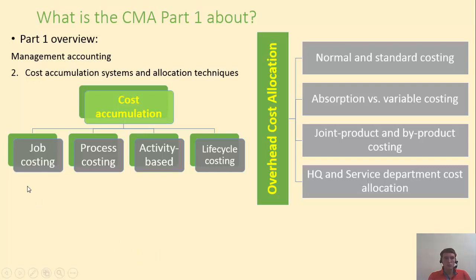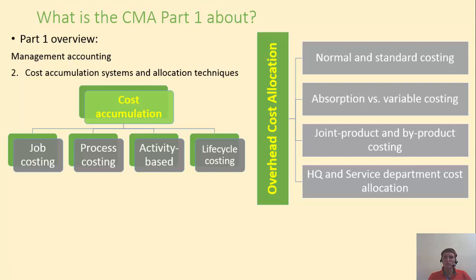We'll discuss job order costing, process costing, activity-based costing, and life cycle costing — different methods of accumulating costs by jobs, by departments, by activities, and so on. A major topic in management accounting is overhead costs, or indirect costs, also known as common costs. We're going to talk about how these costs can be allocated to different cost objects such as products, departments, or business units.